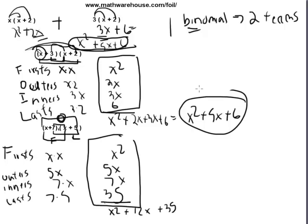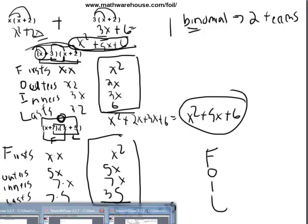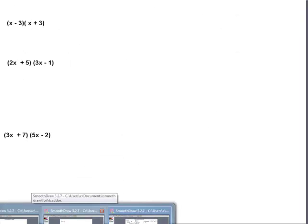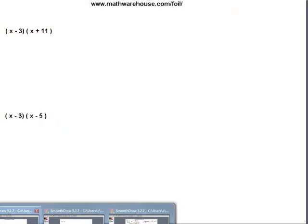So FOIL is just a way to help you remember that you have to multiply the firsts, the outers, the inners, and the lasts whenever you multiply two binomials. Let's do a little more practice with problems like the ones we just did before we look at some more challenging binomials that we are going to multiply.